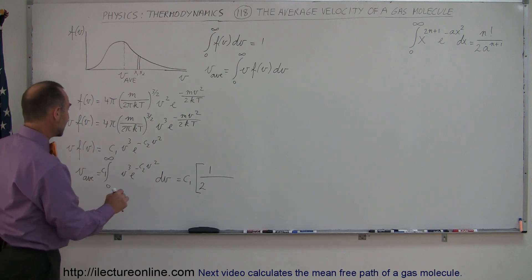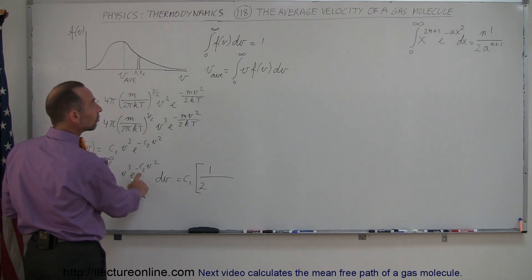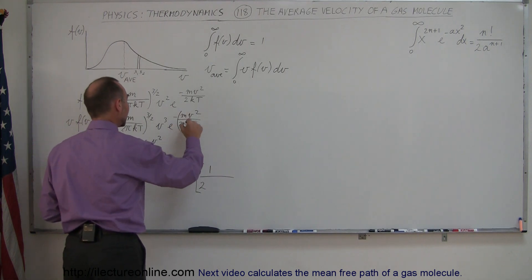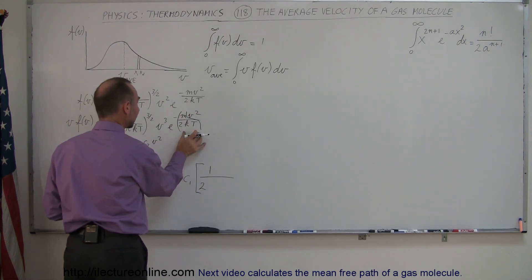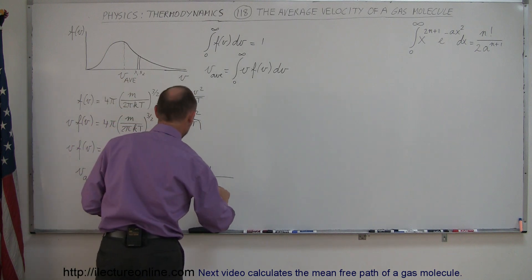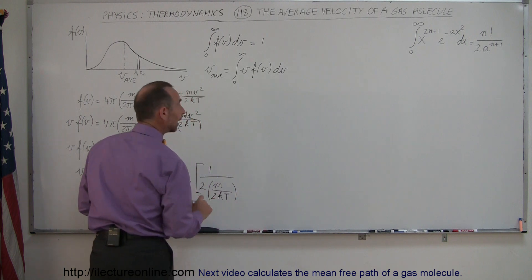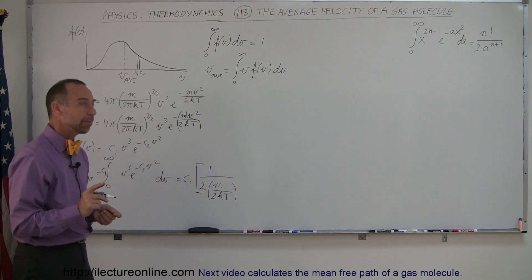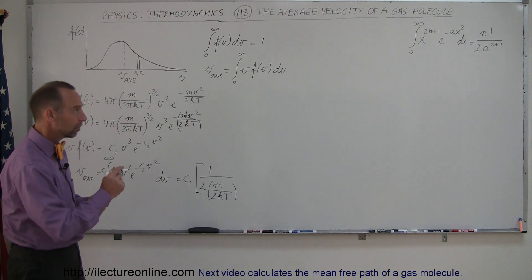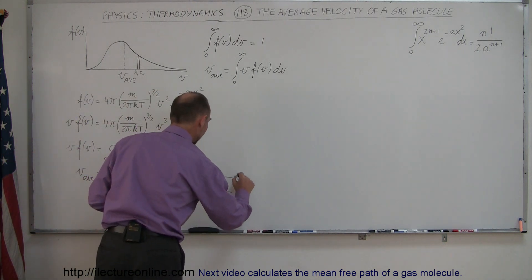Now what was A again? A was a substitution for this C2, so C2 and A are the same, which is this quantity right here. That's my A right there, that needs to go down here, so we have A, which is M divided by 2KT, and that is raised to the N plus 1 power. Now N was 1, so that is therefore raised to the second power.